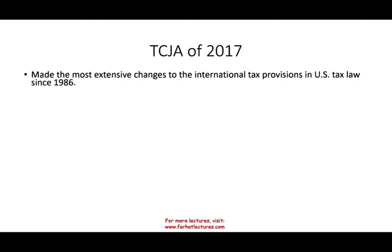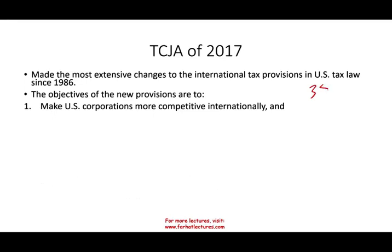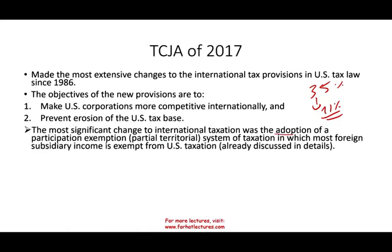The Tax Cuts and Jobs Act of 2017 made the most extensive changes to international tax provisions since 1986. The objective was to make U.S. corporations more competitive internationally. They lowered the rate from 35% overall to a 21% flat rate and worked to prevent the erosion of the U.S. tax base — meaning they removed the incentive to go international. The most significant change was the adoption of a territorial, or partial territorial, system.